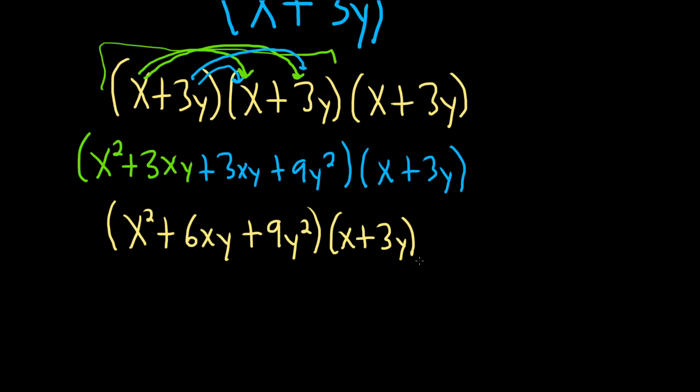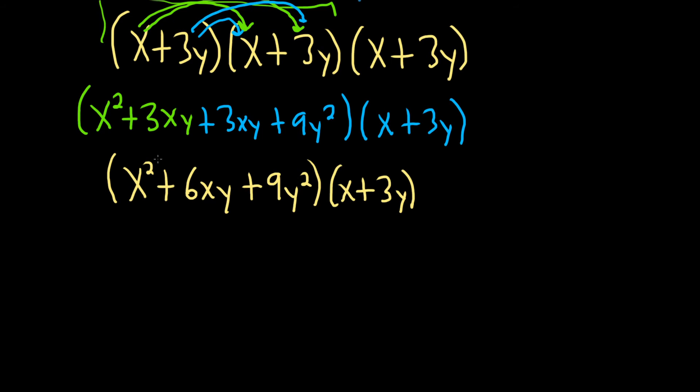So now we're going to distribute again. So let's do it. So x squared times x, that's going to give us x cubed. x squared times 3y, that's going to give us plus 3x squared y. And so now we go to the next one. So 6xy times x will give us plus 6x squared y. That's because x times x is x squared.